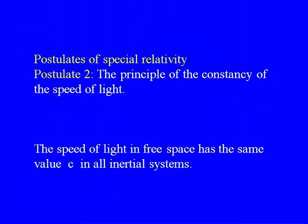The principle of relativity states that the laws of physics are to be the same in all inertial systems — there is no preferred inertial system. If you are in a system and do an experiment, and there is another system moving with uniform velocity relative to yours, you will not be able to differentiate them. The second postulate is the principle of constancy of the speed of light: the speed of light in free space has the same value — 3×10⁸ m/s — in all inertial systems.